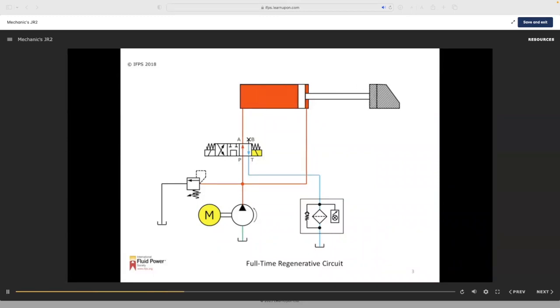Typically, the cap end is approximately twice as large, resulting in an area ratio of approximately two to one. These types of circuits will extend and retract at the same speed.